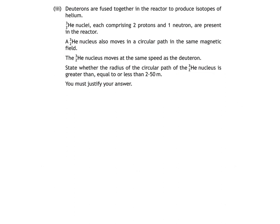Finally, this is B part 3 of the question. Deuterons are fused together in the reactor to produce isotopes of helium. Helium-3 nuclei, each comprising two protons and one neutron, are present in the reactor. A helium-3 nucleus also moves in a circular path in the same magnetic field. The helium-3 nucleus moves at the same speed as the deuteron. State whether the radius of the circular path of the helium-3 nucleus is greater than, equal to, or less than 2.50 meters. You must justify your answer.